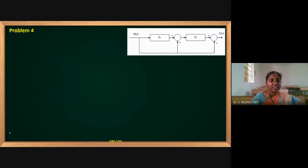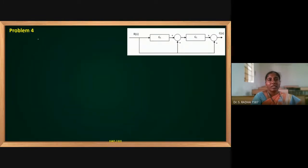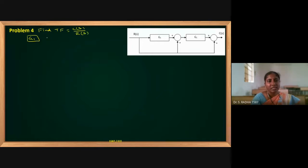This is the next problem. You can see there are two blocks, G1 and G2. I will redraw the diagram for better understanding. Our question is: find the transfer function, which is C(S) divided by R(S) — output by input in the Laplace domain. So G1 is present; after G1 there is a summing point; after the summing point there is G2; after G2 there is one more summing point. Input is R(S).